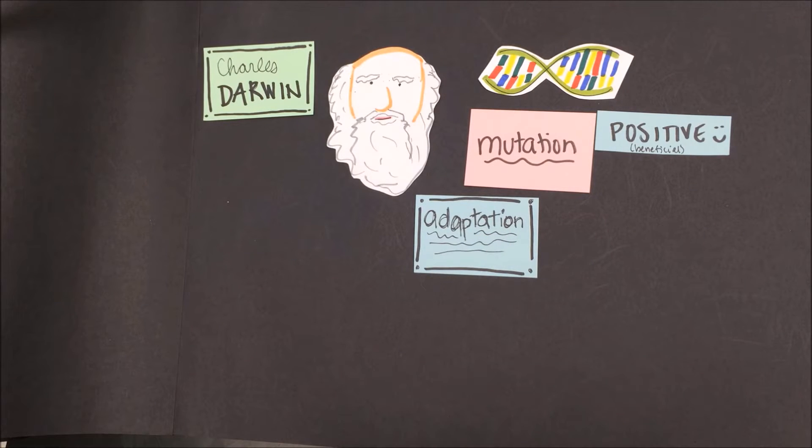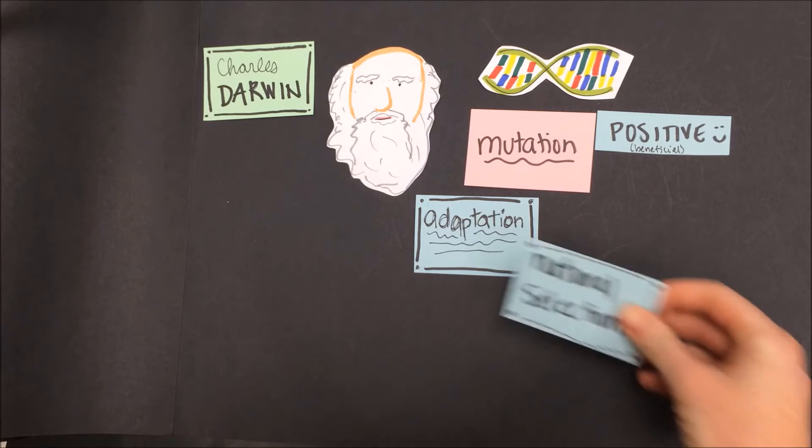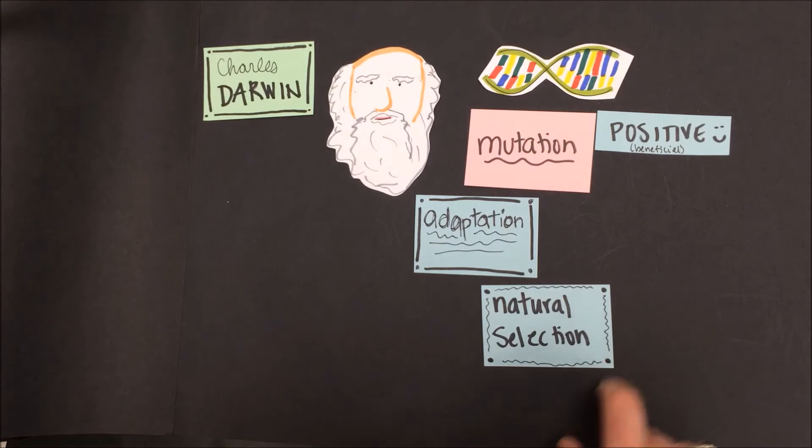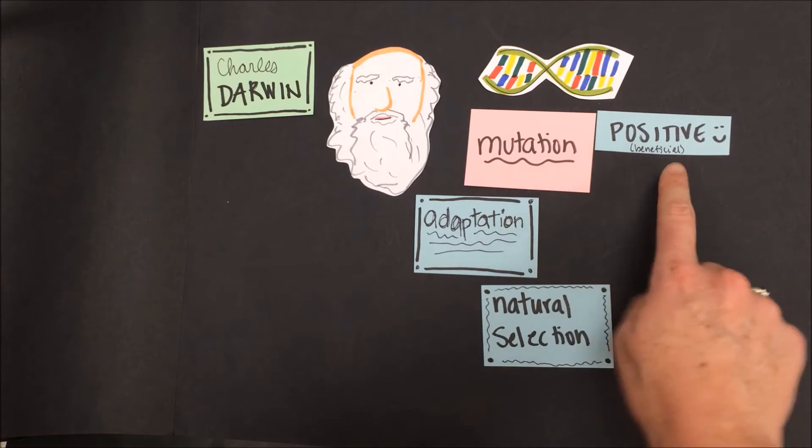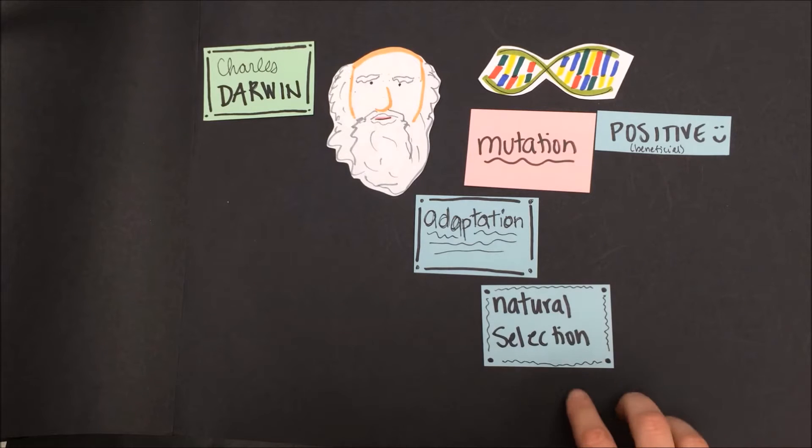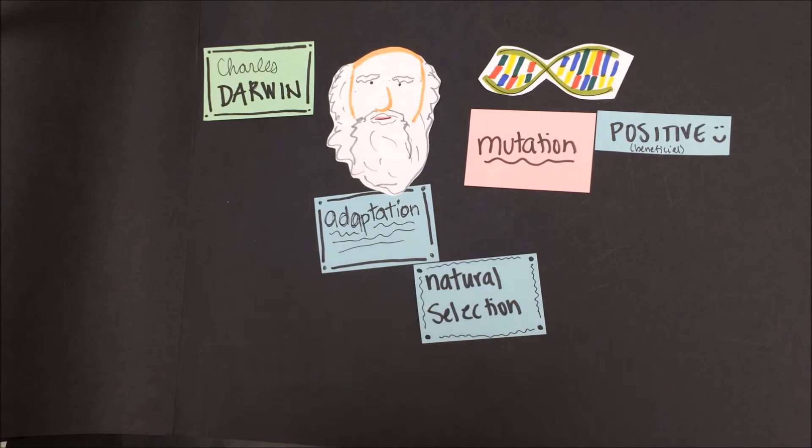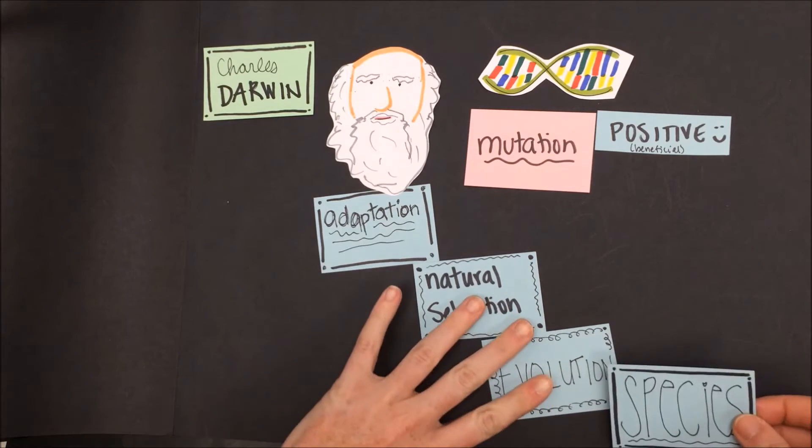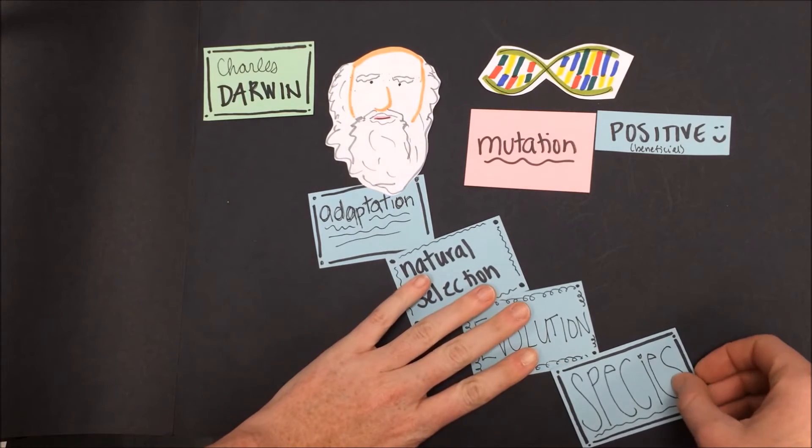Supposing that these changes were positive or beneficial, they would help an organism survive in their environment. Positive changes would lead to an adaptation. An adaptation is any function, structure, or behavior that helps an organism better survive in its environment. As organisms progress through the steps of natural selection, as they struggle to survive, their adaptations, if they were positive and helpful, would make survival much easier. If enough time passed, this would lead to evolution, or accumulated changes in a species over time. Depending on how many changes occurred and how long this went on, this might even result in a new species.